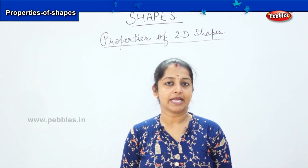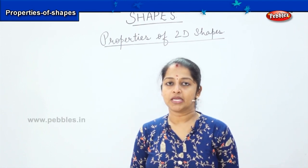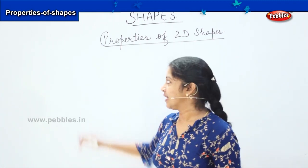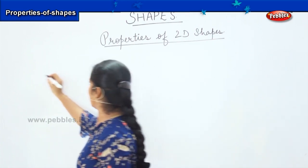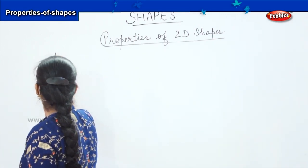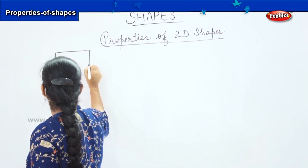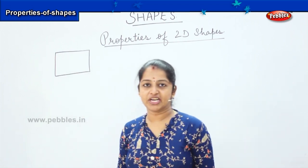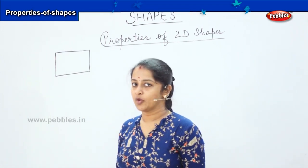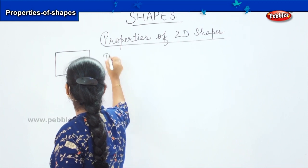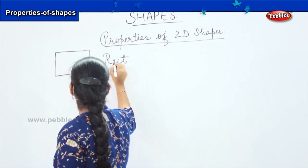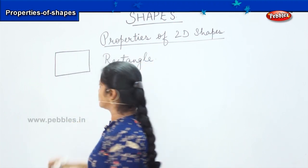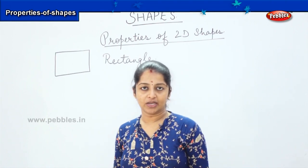Please have a pencil and paper with you so that you can draw along with me to understand the features better. Now tell me, what shape am I drawing now? Can you tell me the name of this shape? Very good. This shape is called a rectangle.